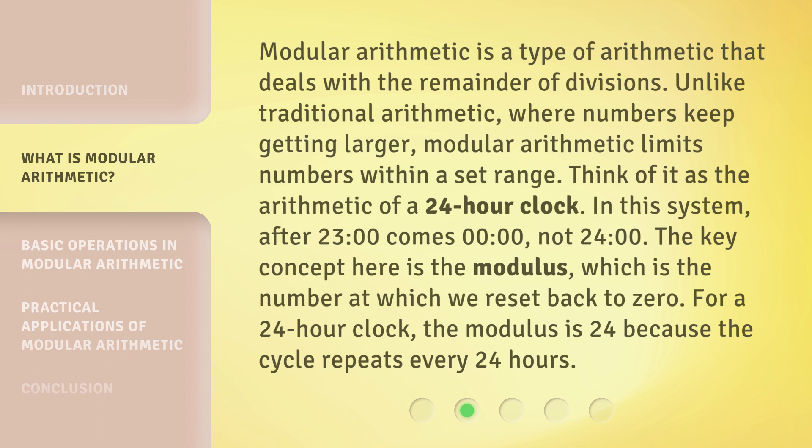The key concept here is the modulus, which is the number at which we reset back to 0. For a 24-hour clock, the modulus is 24 because the cycle repeats every 24 hours.